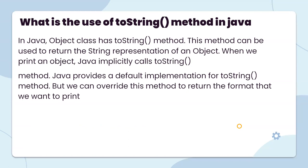What is the use of the toString method in Java? In Java, the Object class has a toString method. This method can be used to return the String representation of an object. When we print an object in Java, Java explicitly calls the toString method. Java provides a default implementation of the toString method, but we can override this method to return the format that we want to print.